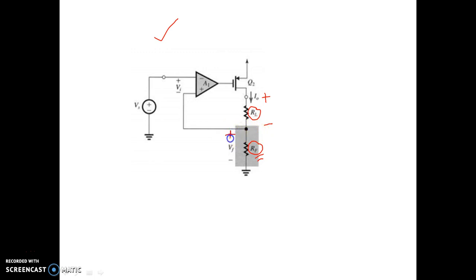Now see, here the feedback voltage plus is there, and here the output voltage plus is there. I told you, if the two pluses are in the same node, that means if the output voltage starting point and the feedback voltage starting point are in the same node, then that is voltage sampling.